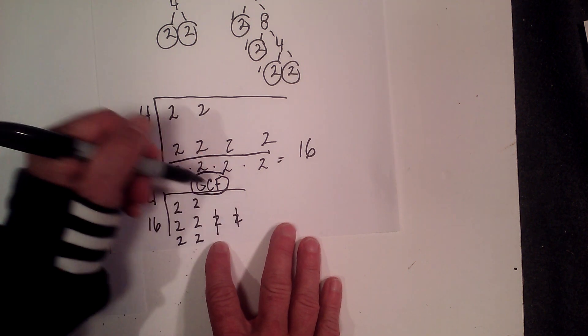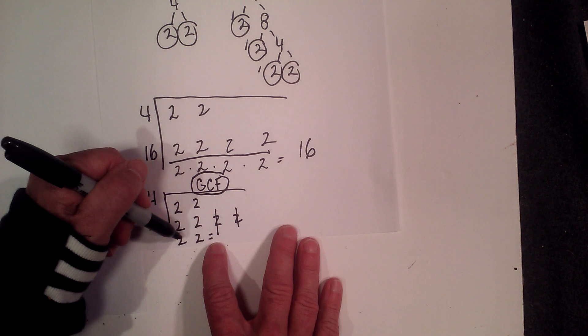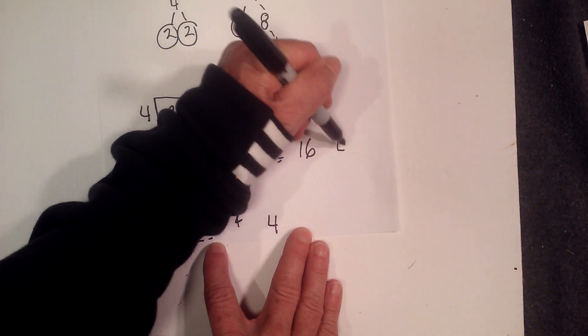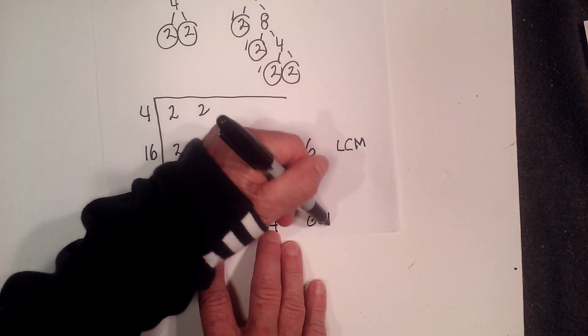Can't use this, can't use this, because you don't have a vertical pair. Remember this is the GCF, 2 times 2 is 4. So here's the LCM, here's the GCF.